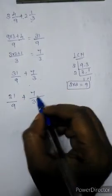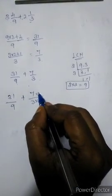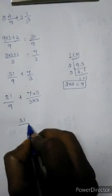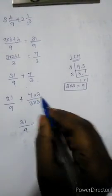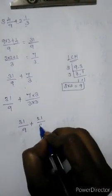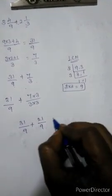3. Then only we can get 9. So same number should be multiplied here also. 31 by 9.